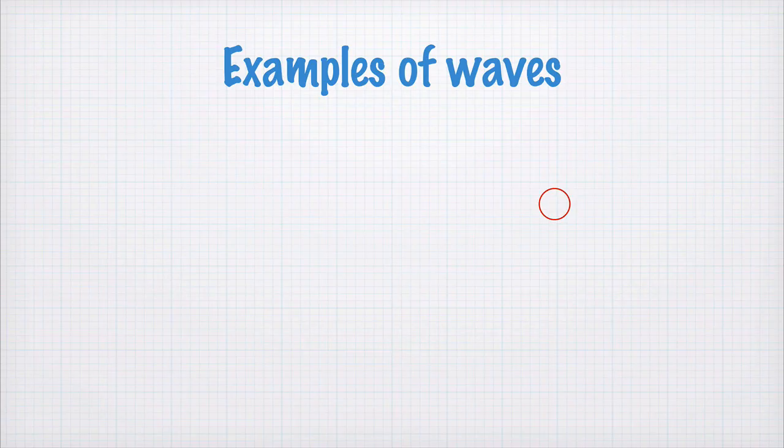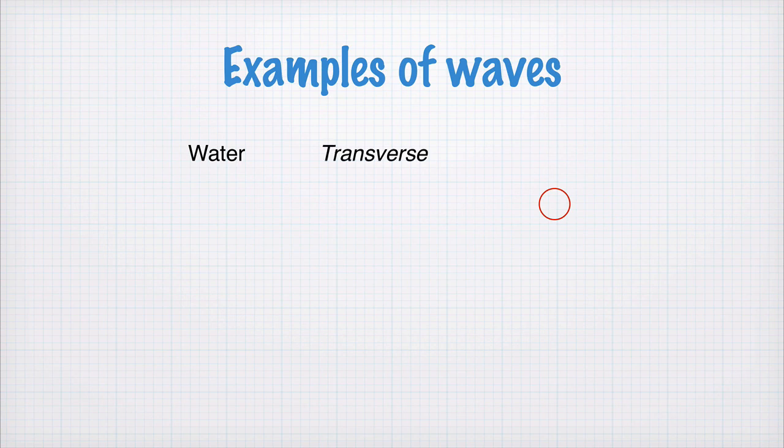Let's look at some examples of waves. Water waves are transverse, because the wave motion, the particles in the water are going up and down, but the direction of the wave propagation is parallel to the ground.